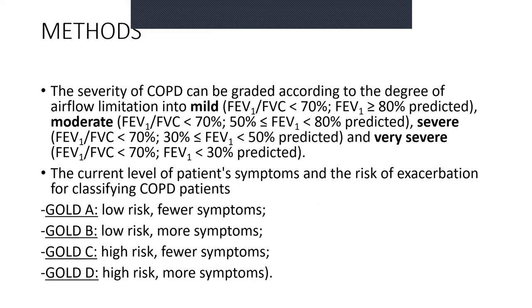GOLD A: low risk, fewer symptoms. GOLD B: low risk, more symptoms. GOLD C: high risk, fewer symptoms. GOLD D: high risk, more symptoms.